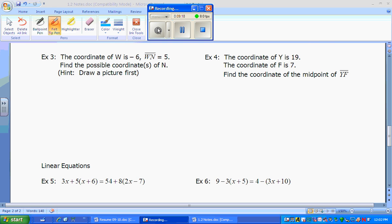Example 3. Let's draw a picture to help us out. Coordinate W is at negative 6. So we'll put W. That's at negative 6. NW equals 5. So find the possible coordinates for N. Well, N could either be to the right or N could be to the left. And we know that NW is 5, so all we have to do is add 5 to negative 6. If we add 5 to negative 6, we're at negative 1. Or if we add 5 to negative 6, but it's in the negative direction, would be at negative 11. So N could either be at negative 11 or negative 1.